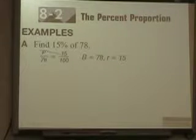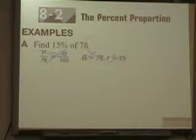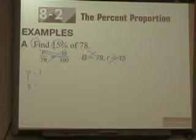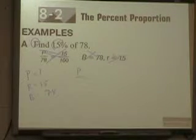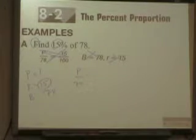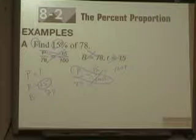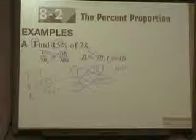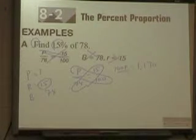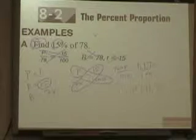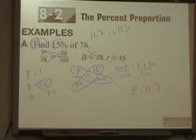Alright, so in this example, let's ignore that they already give us this and let's see if we can find it ourselves. It says find 15% of 78. Is there a first number? No. So we don't know what P is, do we? And what's R? 15. Yeah, 15, because it's the number next to the percentage. And what is B? 78, because it's the last number. So now they've already got it set up here. P over B, and B is 78, equals R, which is 15, over 100. What's P times 100? 100P equals, what's 78 times 15? Put it in your calculator. So 78 times 15 is 1,170, then we're divided by 100 on both sides. So what's P equal? 11.7.